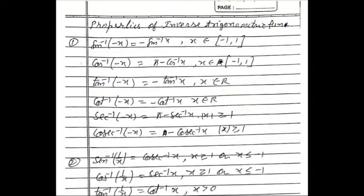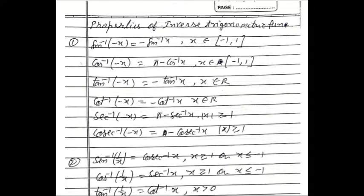Other properties of inverse functions. sin⁻¹(1/x) = cosec⁻¹x, for x ≥ 1 or x ≤ −1. Similarly, cos⁻¹(1/x) = sec⁻¹x, for x ≥ 1 or x ≤ −1. And tan⁻¹(1/x) = cot⁻¹x, for x > 0.